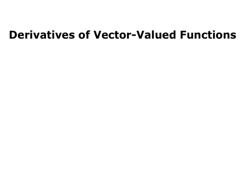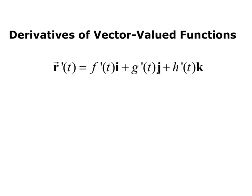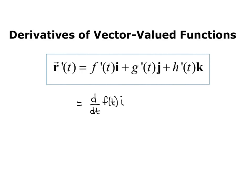Derivatives of vector-valued functions: the way we take a derivative is component-wise. So r prime of t equals f prime of t i, plus g prime of t j, plus h prime of t k. This is equivalent to taking d over dt of each component separately — d over dt of f of t i, plus d over dt of g of t j, plus d over dt of h of t k.